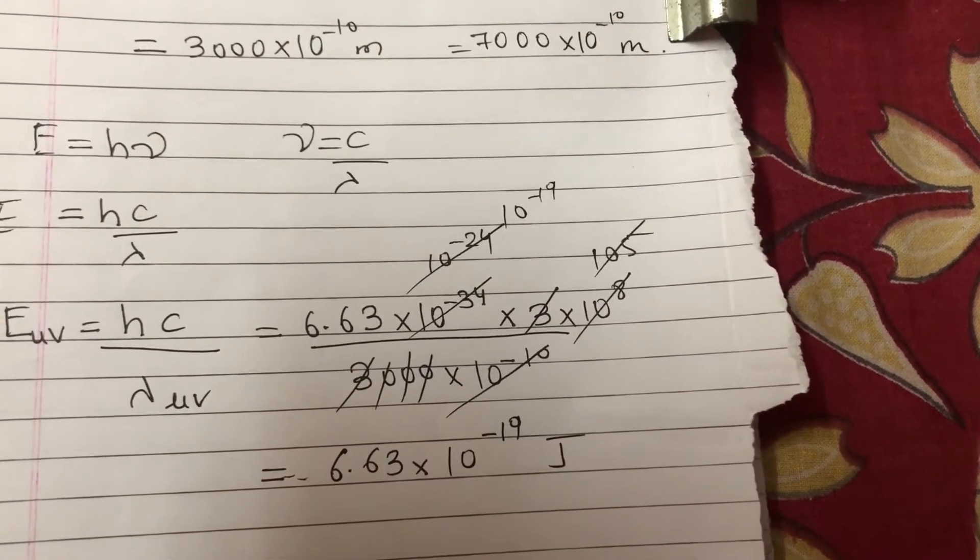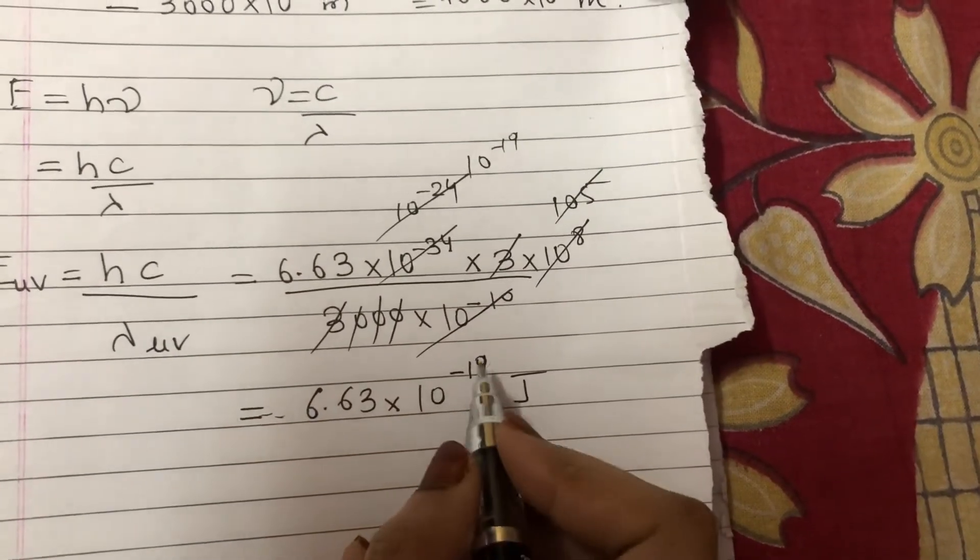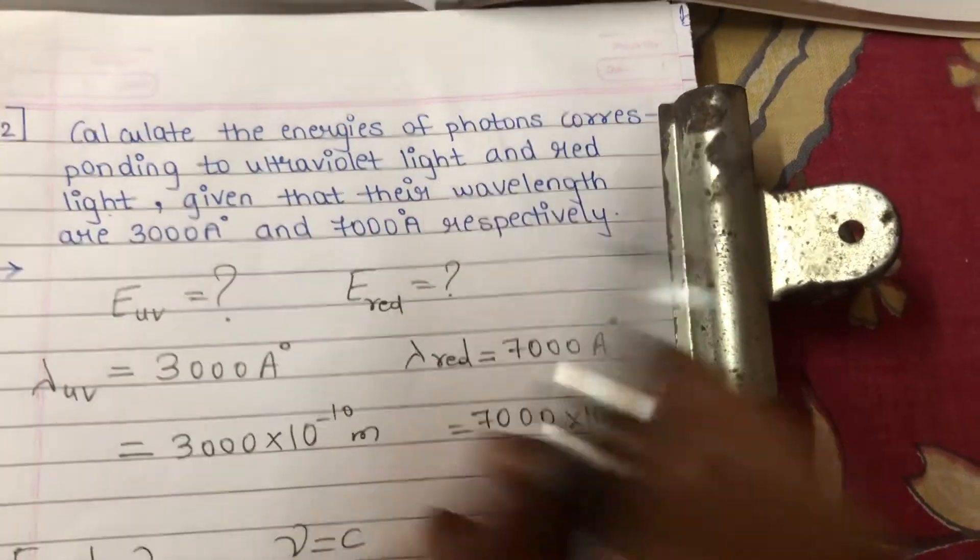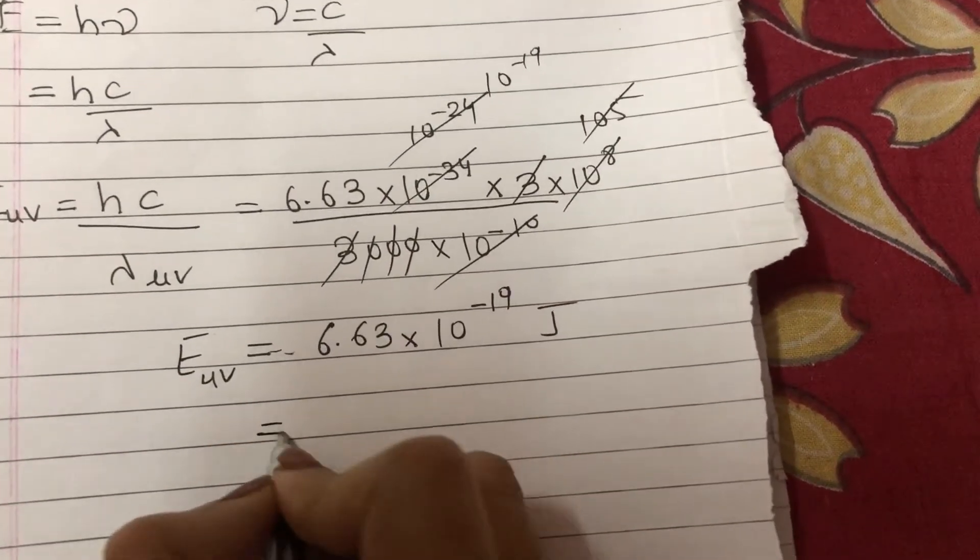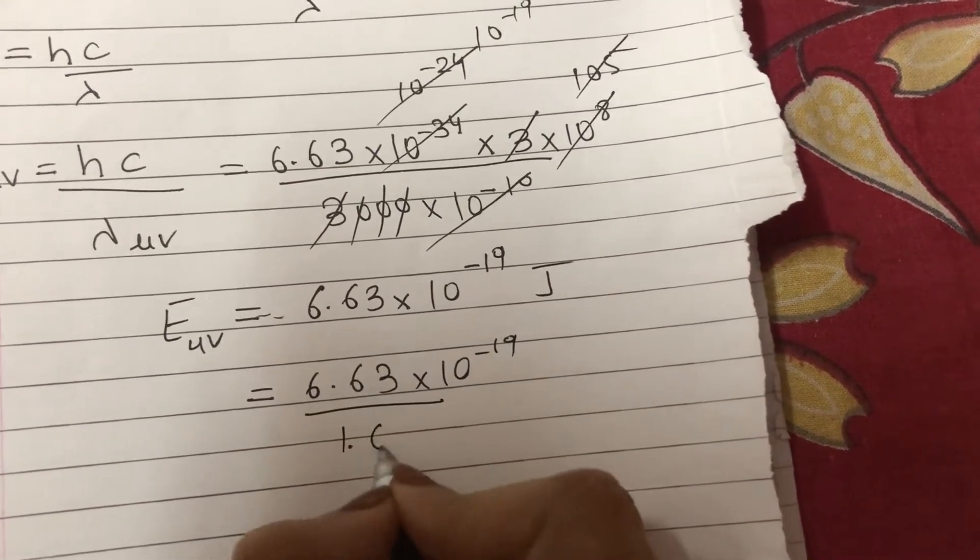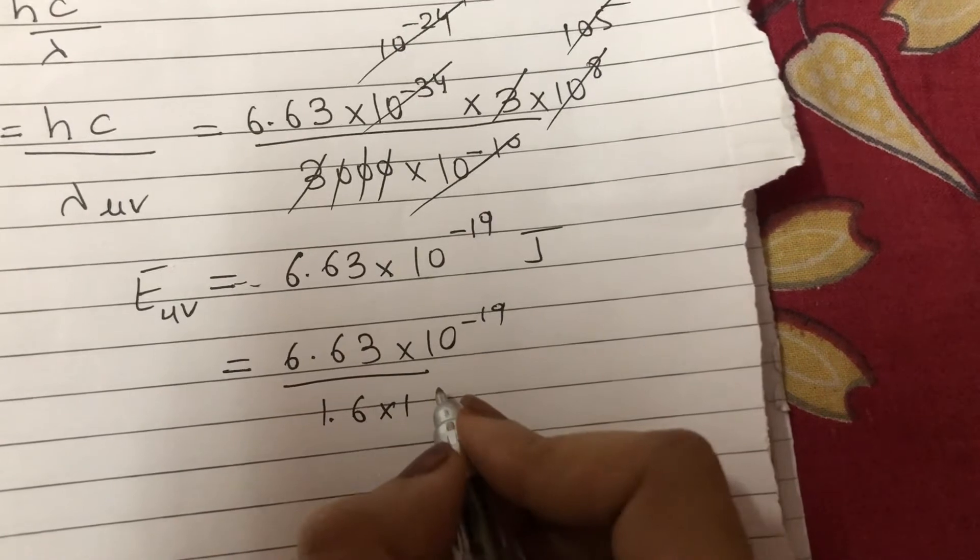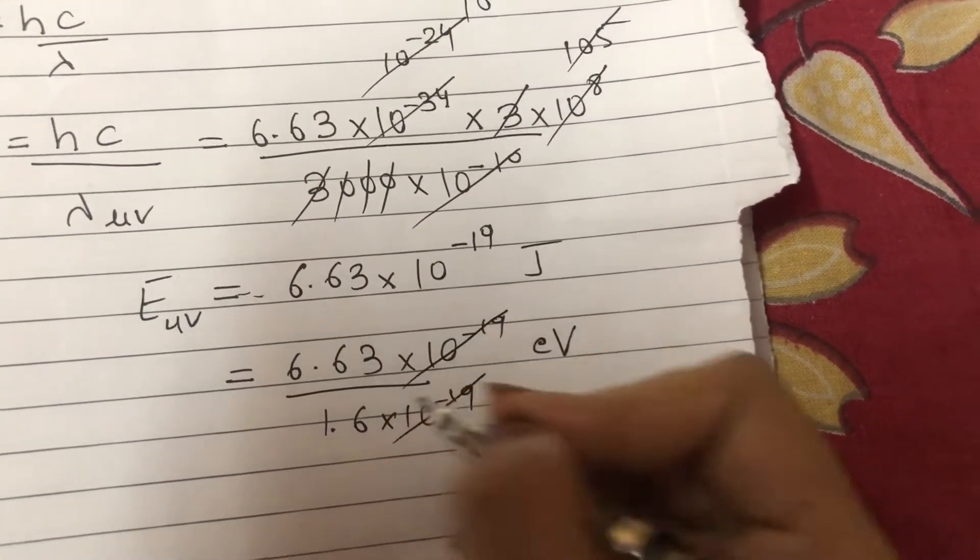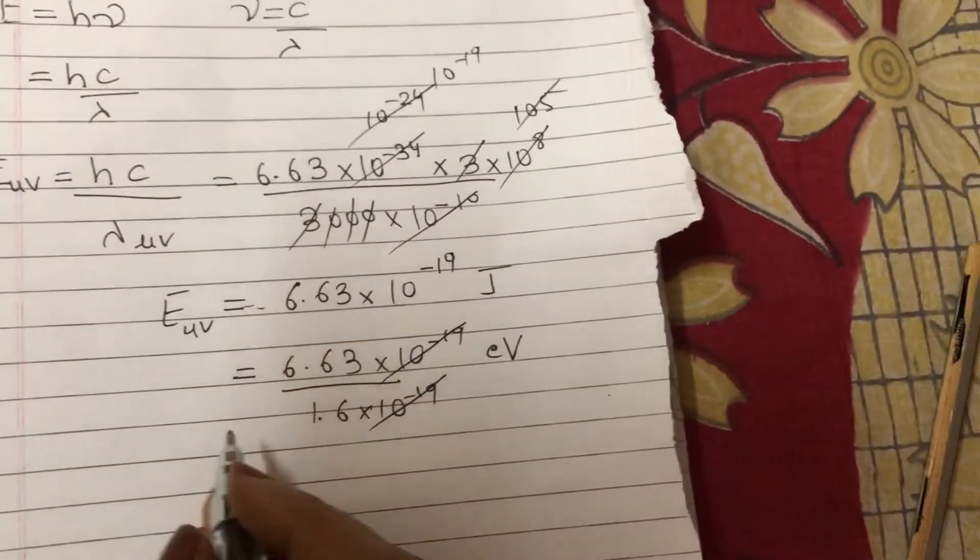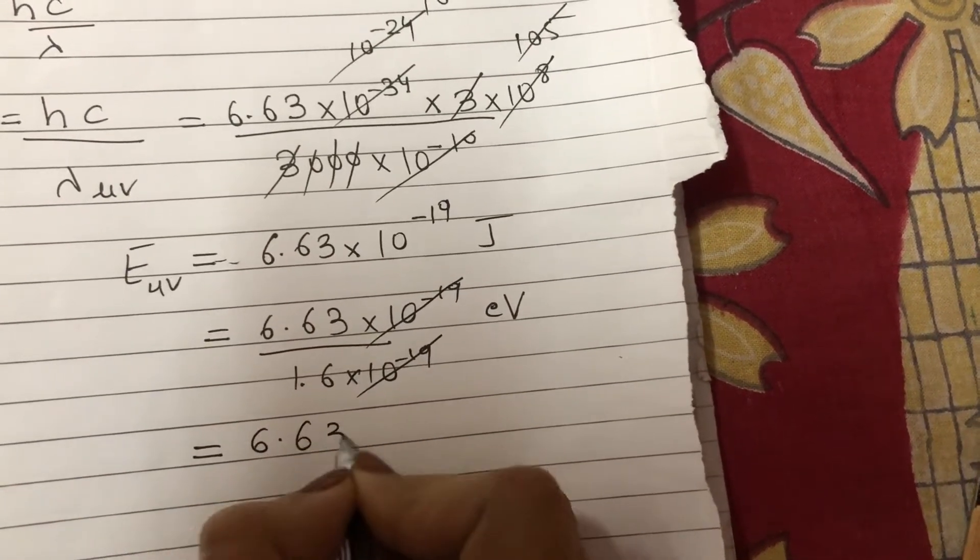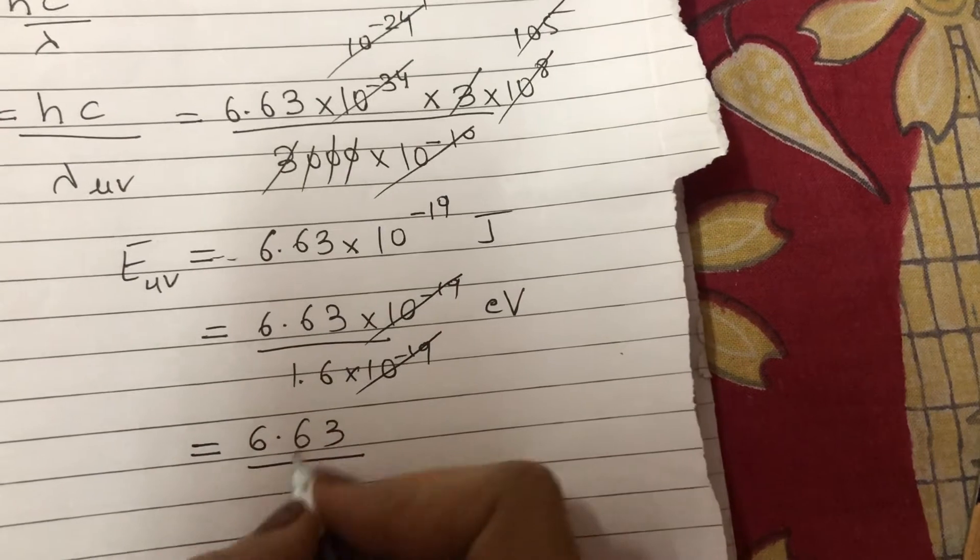If they ask us to calculate in electron volts, I'll write 6.63×10^-19 joules divided by 1.6×10^-19. This converts it into electron volts. 10^-19 gets canceled. Now instead of going into log, we can also do it like this: 6.63 divided by 1.6, which I can make as 16/10.